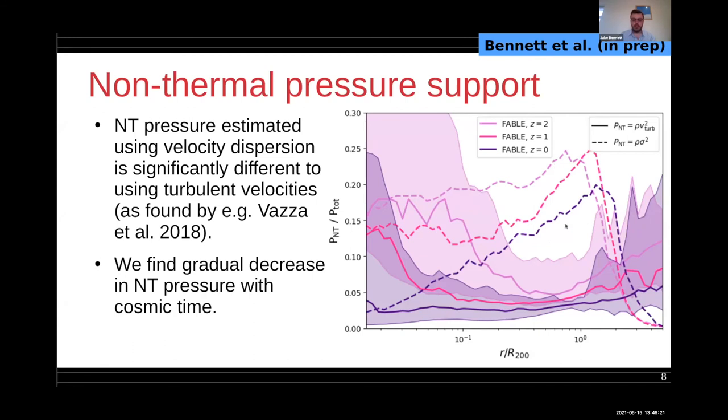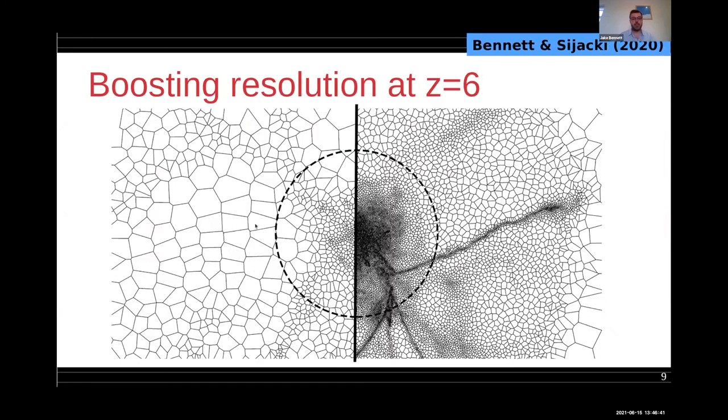However, this seems to be from previous work that I'm about to talk about, to be resolution dependent, which brings me to some previous work I've worked on, which is what happens when you boost the resolution. This is what happens when you boost the resolution around a halo. This is a massive halo at redshift six. On the left is the same resolution as the FABLE simulation I've just been showing, and on the right is where you boost it by a factor of 512. You can start to pick out a lot more structure.